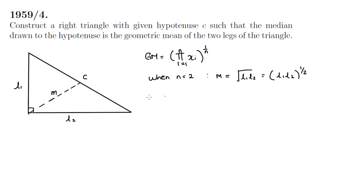One way to go about setting up for this construction is to think about the triangle as being inscribed in a circle. Because we're given the length of c, the hypotenuse.